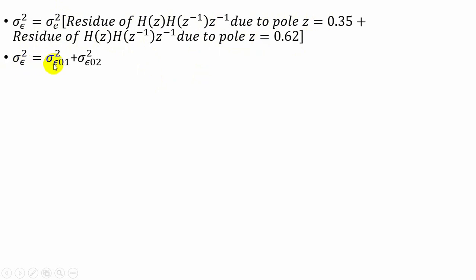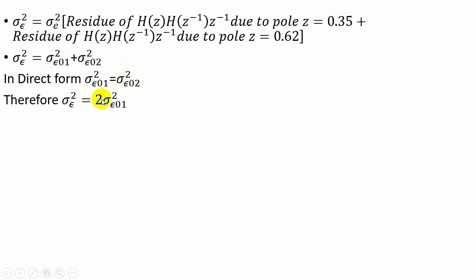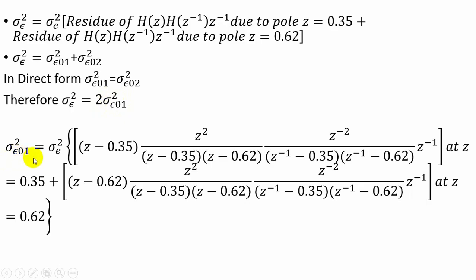The output noise power equals noise power due to e1(n) plus noise power due to e2(n). In direct form these are equal, so total output noise power = 2 × (noise power due to e1(n)). The output noise power due to e1(n) equals the input noise power multiplied by the sum of residues of H(z)·H(z⁻¹)·z⁻¹ at z = 0.35 and z = 0.62. Cancelling z² and z⁻² terms and substituting each pole value gives the residues.